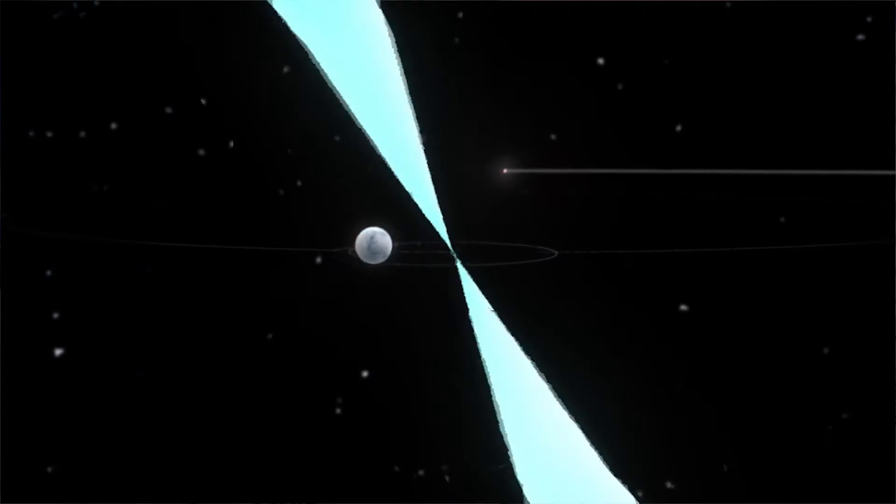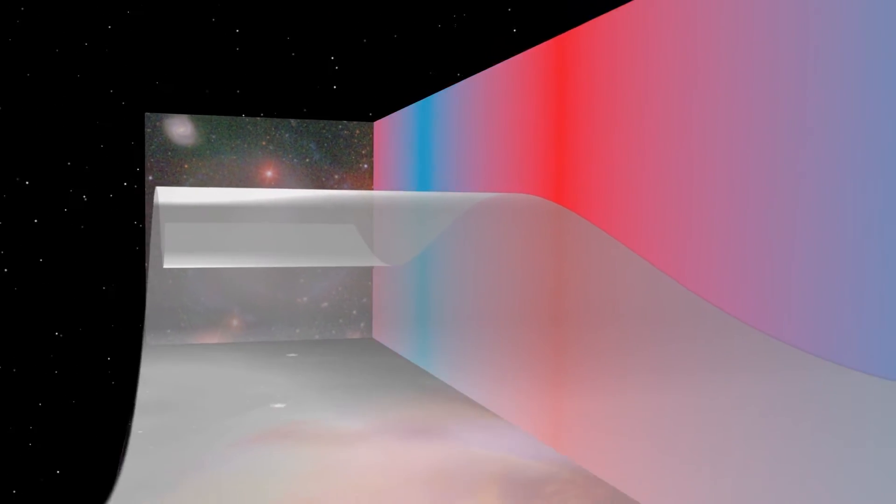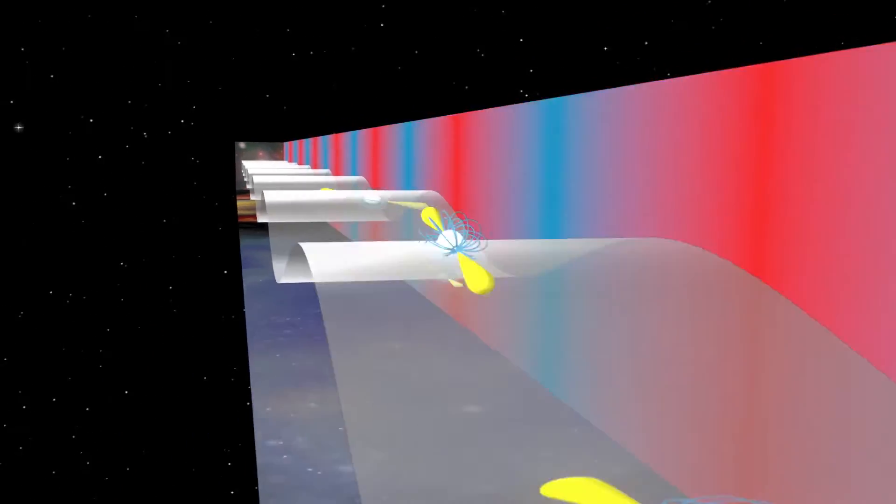One of the biggest projects we're doing right now with pulsars and the GBT is a project called Nanograv, which is using pulsars to try and detect gravitational waves that are being emitted by the largest black holes in the universe.